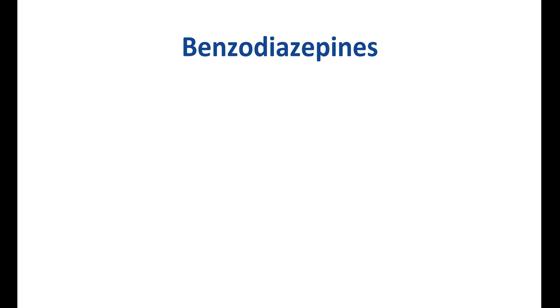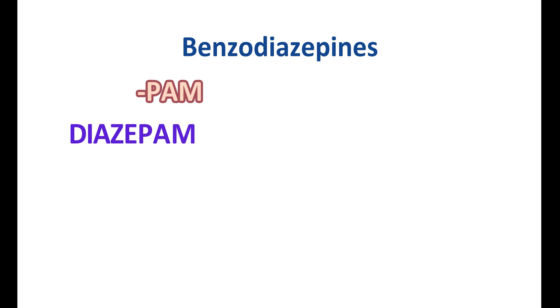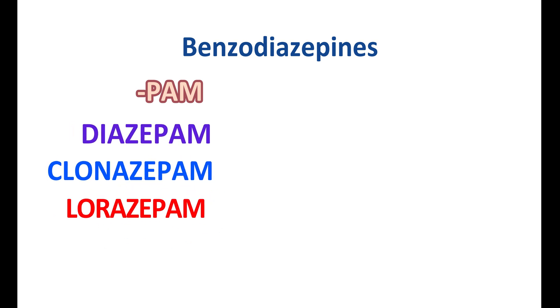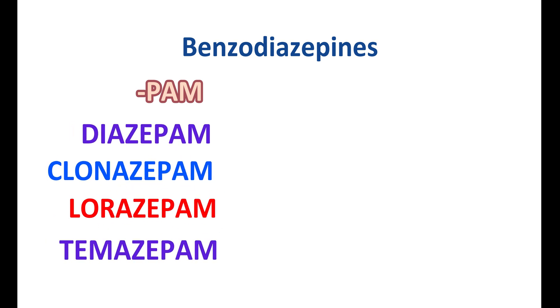The first class is benzodiazepines, commonly known as benzos, which can be identified by their suffix '-pam'. Drugs include diazepam, clonazepam, lorazepam, temazepam, and alprazolam — which has the different suffix '-azolam' but is still a benzodiazepine. Clonazepam, alprazolam, and lorazepam are the most widely used to control anxiety.